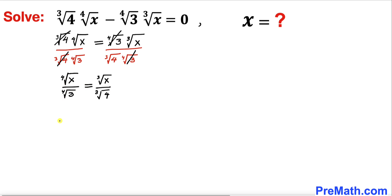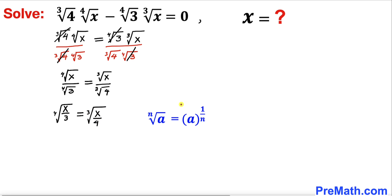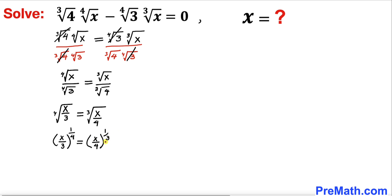Now we can write the left hand side as (x divided by 3) to the 4th root, and likewise the right hand side as (x divided by 4) to the cube root. Recalling the rule that the nth root of a equals a to the power 1 over n, we rewrite this as (x/3)^(1/4) equals (x/4)^(1/3).